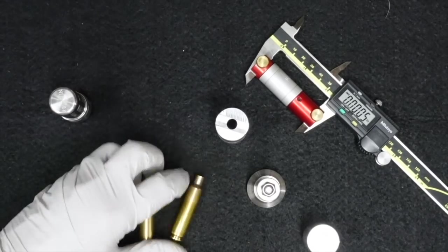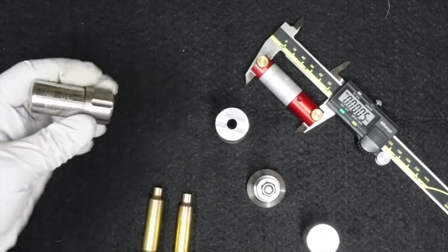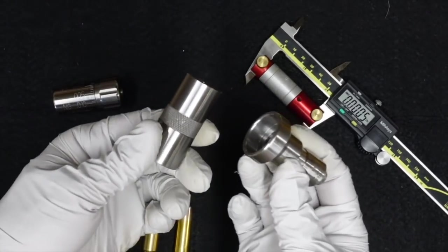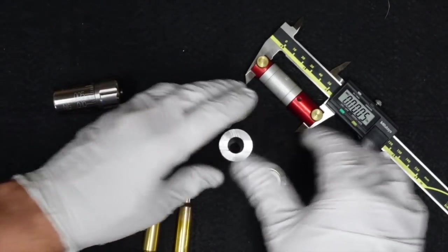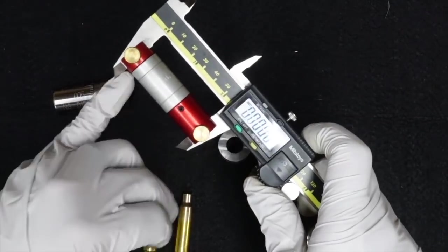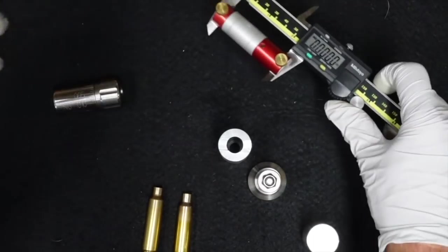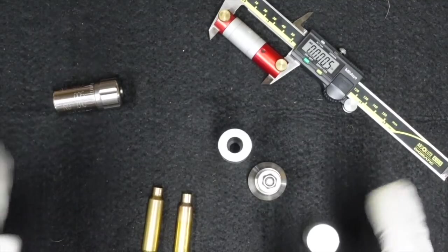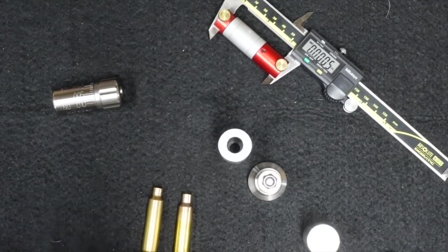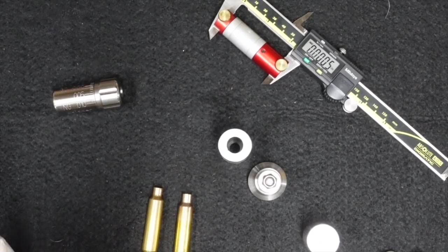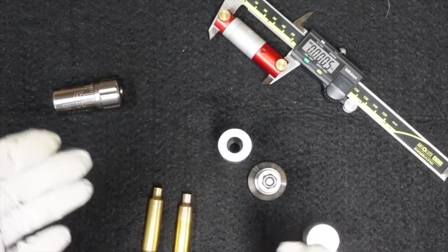So how do we measure our shoulder bump? We can use either the Witten case gauge, a Wilson case gauge and micrometer top, or the Hornady shoulder bump kit on a good set of calipers. Let me show you how each of these tools works. There's reasons that I like or don't like each one and they're just going to fit your needs differently.